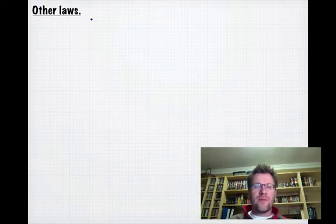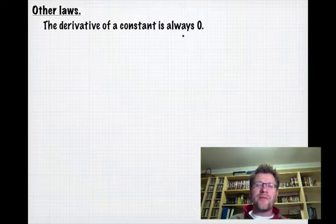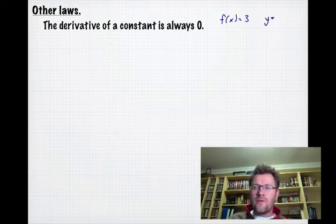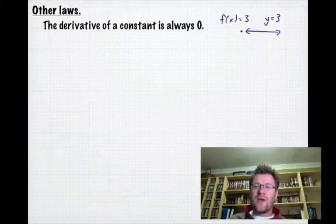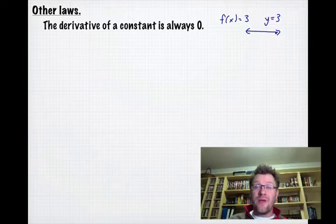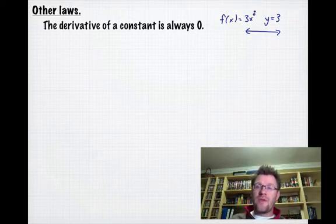We have other laws based on our power law. First, the derivative of a constant is always 0. If f(x) = 3, that's the same as y = 3, which is a horizontal line on a graph. Since the derivative is the tangent line to a curve, and a horizontal line's tangent is also horizontal, the slope is 0. Another way to see it: 3 = 3x⁰, so using the power law, we bring down the 0 exponent: 0 × 3 = 0.